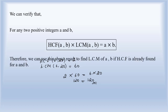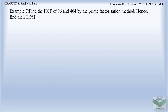Therefore, we can use this result to find the LCM of A and B if the HCF is already found. Now let us go to example number 7: find the HCF of 96 and 404 by prime factorization method, hence find their LCM. So first we have to find the HCF of 96 and 404.